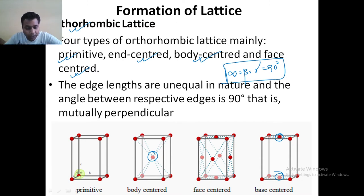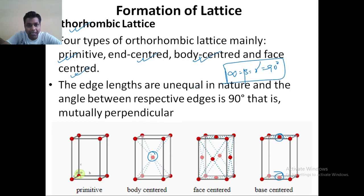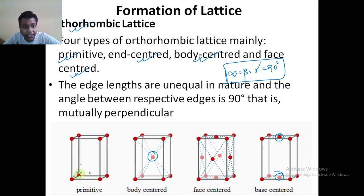So in cubic, tetragonal, and orthorhombic, the angles alpha, beta, and gamma are all 90 degrees and equal to each other. It means that all the edges are perpendicular to each other in case of your cubic, tetragonal, and orthorhombic.